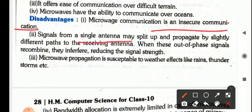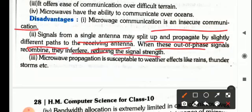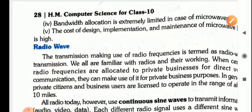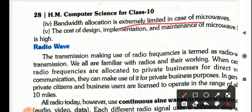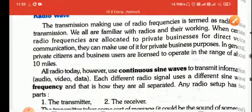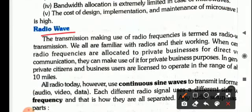What are its disadvantages? It is an insecure communication. Signal from a single antenna may split up and propagate by slightly different paths to the receiving antenna. When these out-of-phase signals recombine, they interfere, reducing the signal strength. Microwave propagation is also susceptible to weather effects like rain, thunderstorm, etc. The bandwidth is extremely limited, and the cost of design, implementation, and maintenance of microwave is very high.